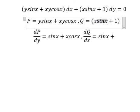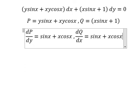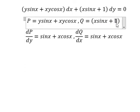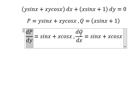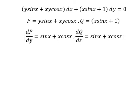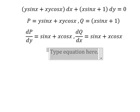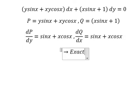Then we differentiate sine X, and we have cosine X. Number 1 — that is about the constant, so we got 0. And we see that this one is the same as this one, so in this situation that is about exact.